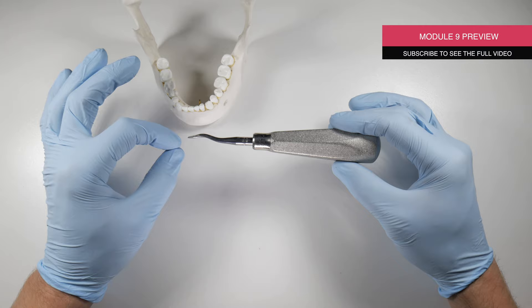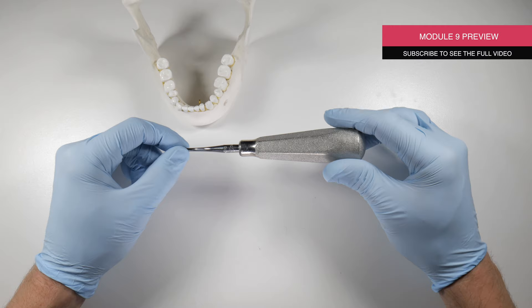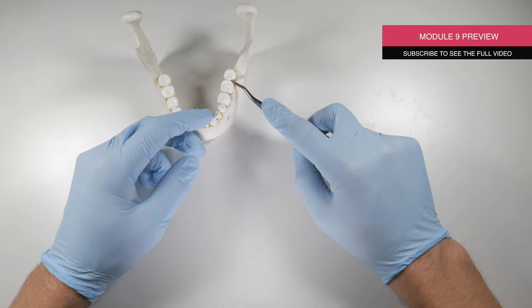help you understand why we use the elevator the way that we do to make it as optimal as possible when we're using it in the mouth. The performance of this should allow you, if you're using it appropriately, to sometimes even take teeth out without the use of a forcep.